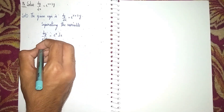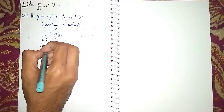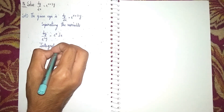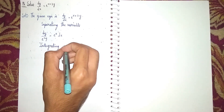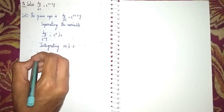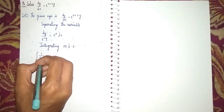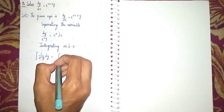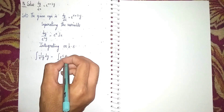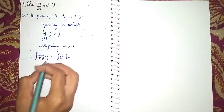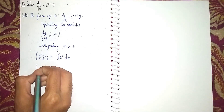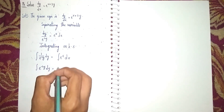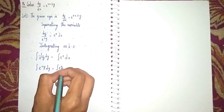Now integrating on both sides. We integrate 1/e^(2y) dy = integrate e^x dx. Sending e^(2y) to the denominator makes it positive, so we get: integrate e^(-2y) dy = integrate e^x dx.